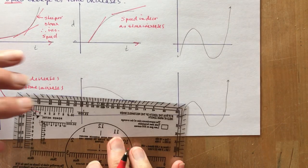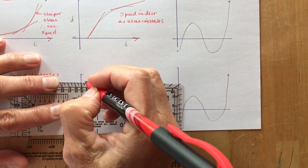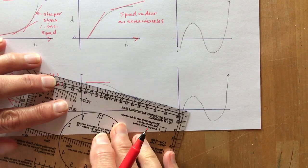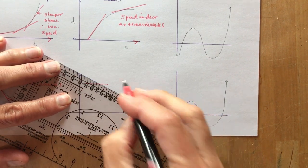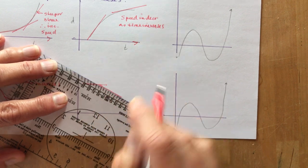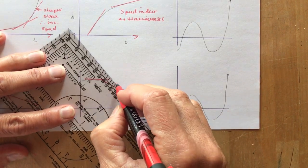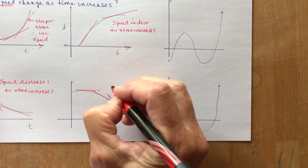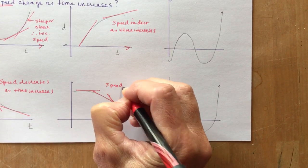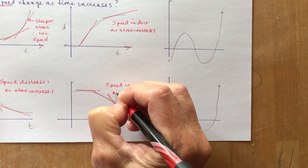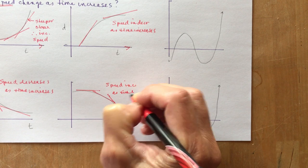And in the next one, you can see that the speed was pretty slow here, actually almost stopped, and then as we go this way the lines are more negative. It doesn't matter, we're talking about the steepness, so this means the speed increases as time increases.